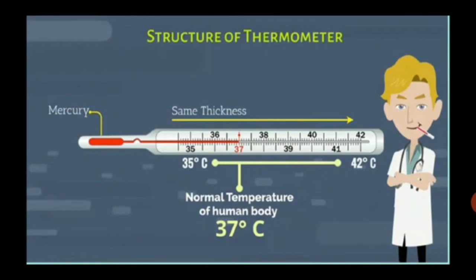Now, let us understand the structure of clinical thermometer. Children, there is a long narrow tube with same thickness throughout the length. On one side of this tube, there is a bulb which contains mercury.